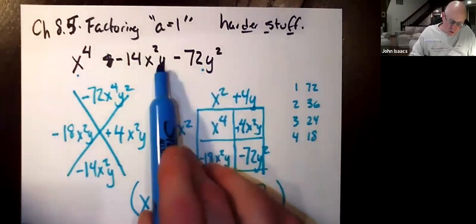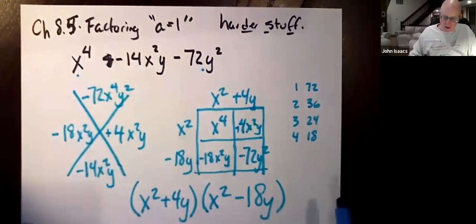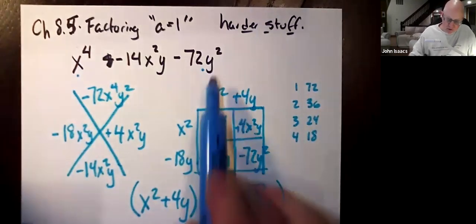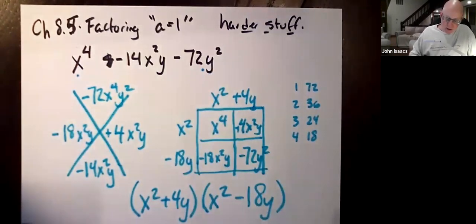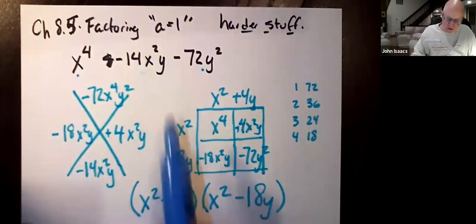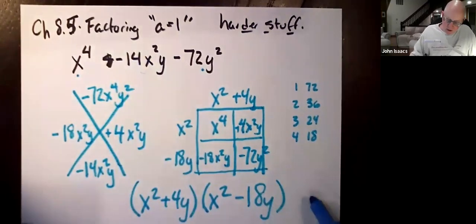And back here, if you have y squared and y and nothing, well, then you're going to have a y and a y so that our lasts multiply to y squared and our middle terms come out. 4y times x squared, that's going to be an x squared y term. And 18y times x squared, that's going to be an x squared y term. And we're done.